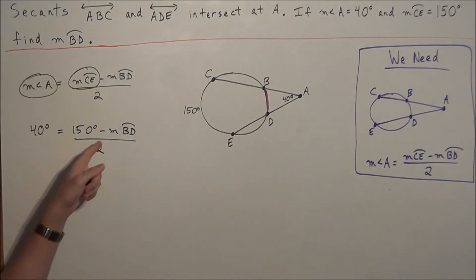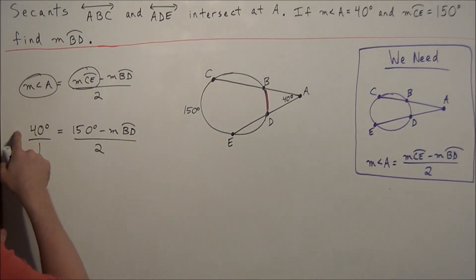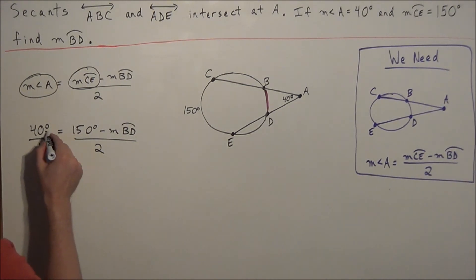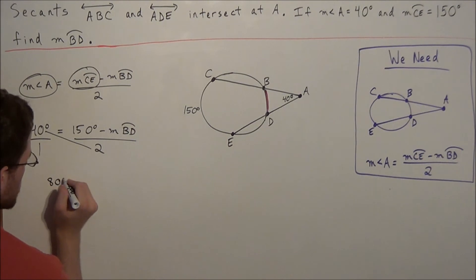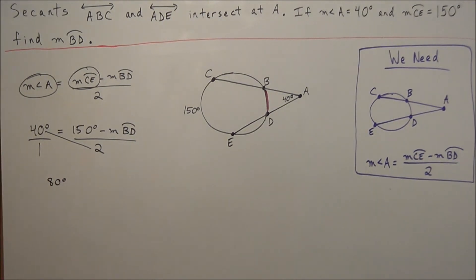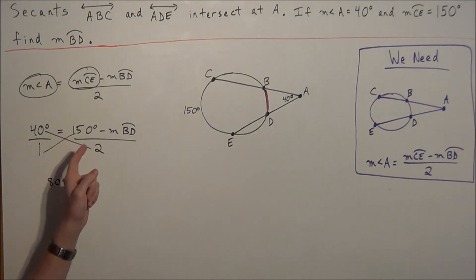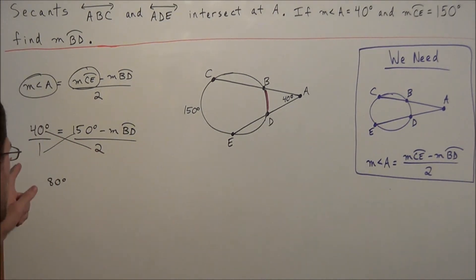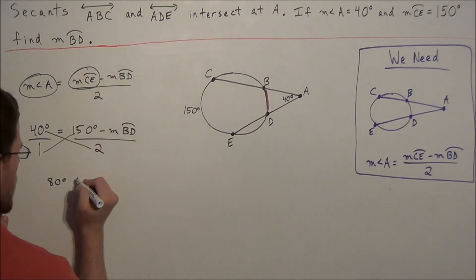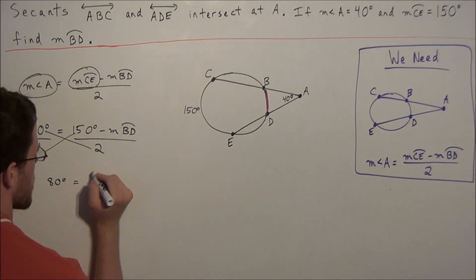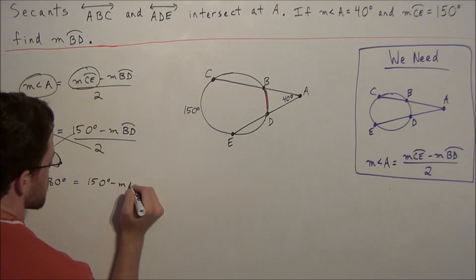To solve for the measure of arc BD, we cross multiply — treating 40 degrees as 40 degrees divided by 1. So 2 times 40 degrees gives us 80 degrees. Using the distributive property for 1 times the quantity 150 degrees minus the measure of arc BD, since 1 is the identity element we simply rewrite the expression. So we have 80 degrees equals 150 degrees minus the measure of arc BD.